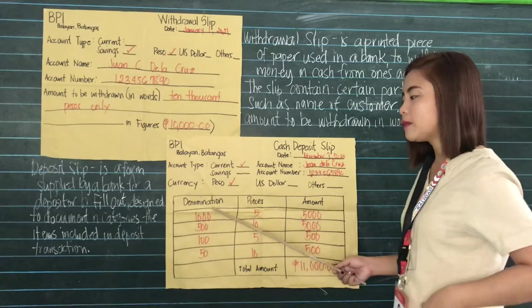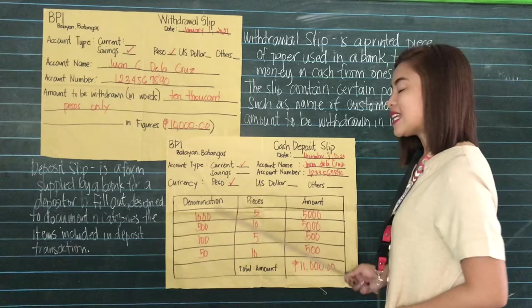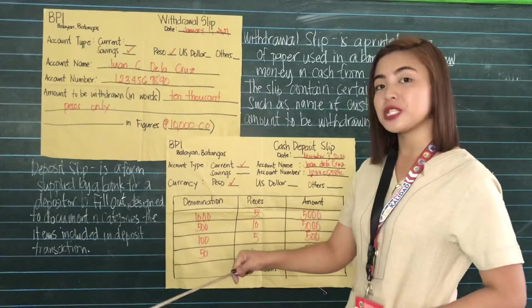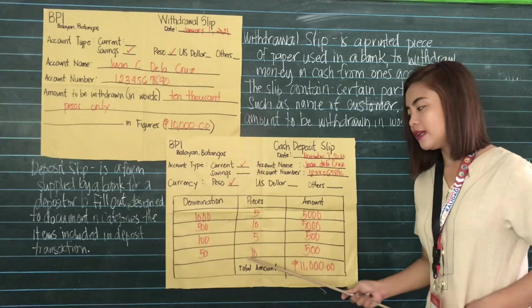In my case, I put here 1,000 pesos, 500 pesos, 100 pesos, and 50 pesos as the denominations. Pieces refers to the number of bank notes you are to deposit. So I have 5 pieces of 1,000 peso bills, 10 pieces of 500 peso bills, 5 pieces of 100 peso bills, and 10 pieces of 50 peso bills.